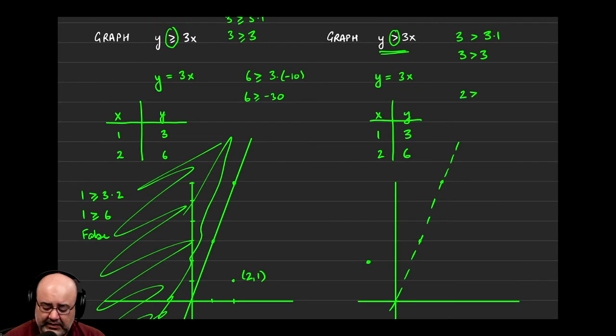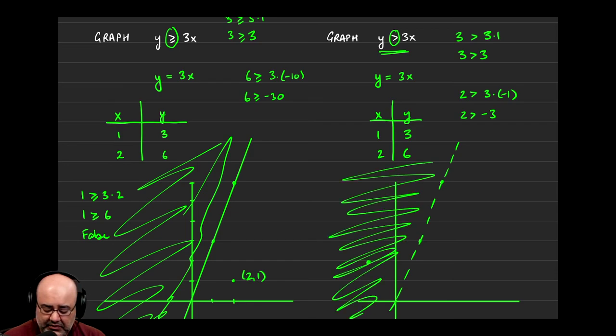2 is greater than 3 times negative 1. 2 is greater than negative 3. And that's a true statement. So now this point did not lie to us. This point told us the truth, so we should shade on the side that the point is telling us the truth.